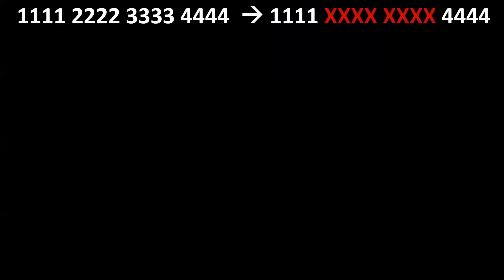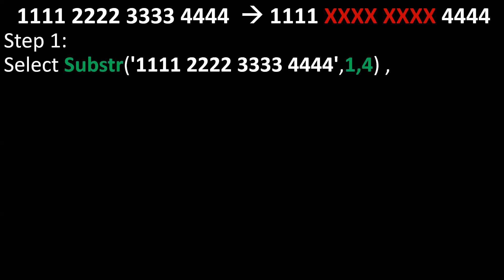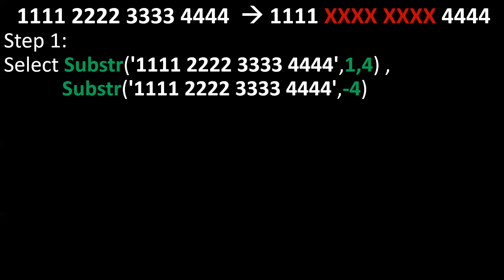Next, we'll see how to mask a credit card or other number while displaying. The requirement is that we want to display the first four and last four digits of the particular number or credit card number, and the rest of the digits need to be masked with 'X'. By using substring, we get the first four digits.